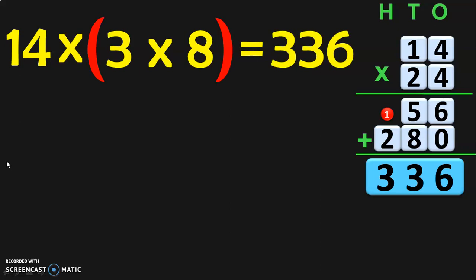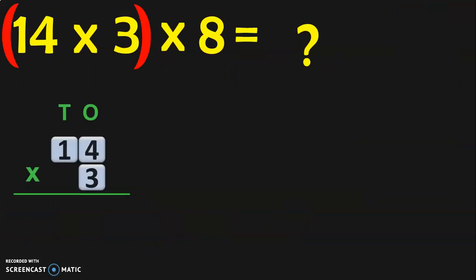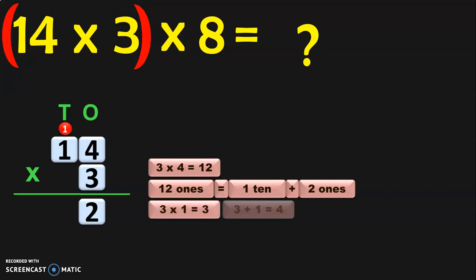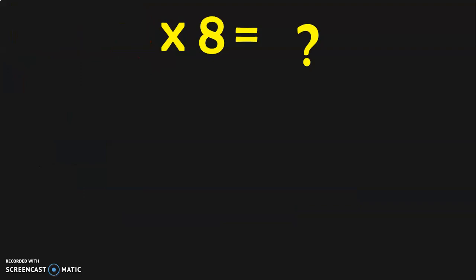So 14 into 3 into 8 is equal to 336. Now we have to verify by grouping 14 into 3 as a single entity. 14 is a 2-digit number and 3 is a single digit. 3 into 4 is 12 — that is 1 ten plus 2 ones; write 2 in the 1s place and carry 1. 3 into 1 is 3; 3 plus 1 is 4. So the answer is 42. Therefore 14 into 3 is 42.